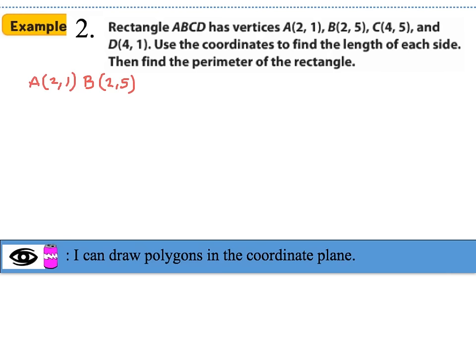To find the distance between point A (2,1) and point B (2,5): the x-coordinates are both 2, so we ignore those and find the absolute value difference of the y-coordinates: |5 − 1| = 4. The distance from point A to point B is 4 units.